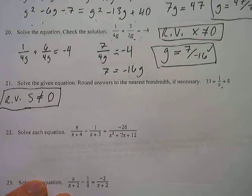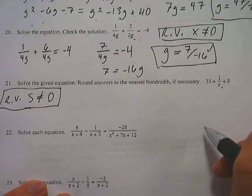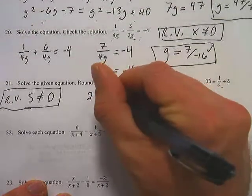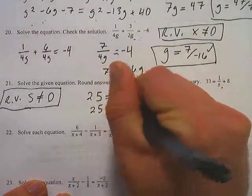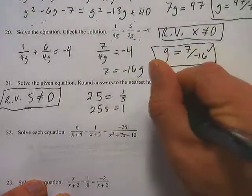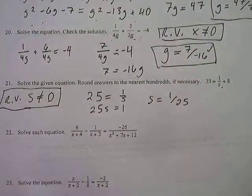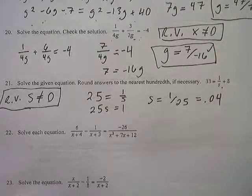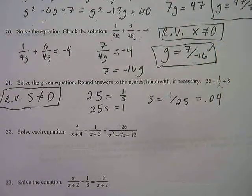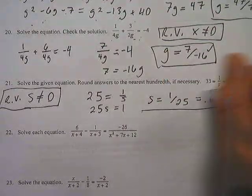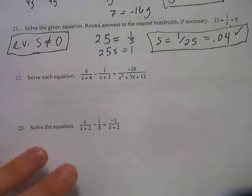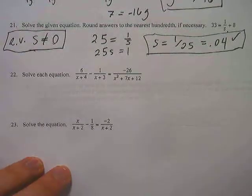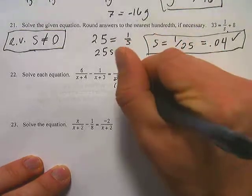Number 21: solve the given equation, rounding to the nearest hundredth if necessary. There's only one restricted value: s cannot equal 0. Subtracting 8 from both sides gives 25 equals 1 over s. Multiplying s on both sides gives 25s equals 1, so s equals 1 over 25. Using a calculator, 1 over 25 is 0.04, which is not a restricted value. Therefore, 0.04 is the correct solution.